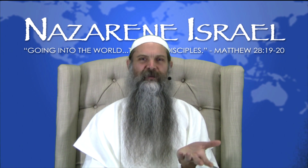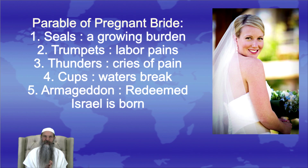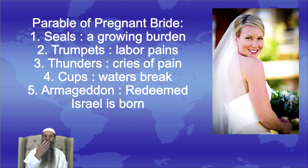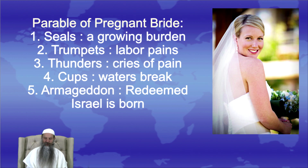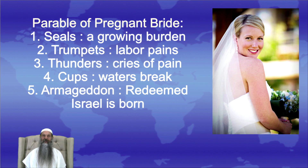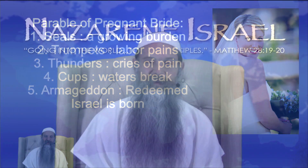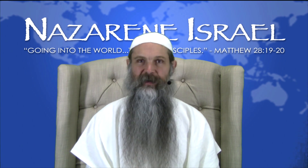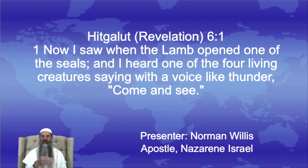People say, 'Norman, give me something easier to remember all this detail.' If we accept it, there is the parable of the pregnant bride. If Israel — or the Nazarene Israelites — received the Spirit in the first century, we liken this to Israel becoming a pregnant bride. The seals, playing out over thousands of years, represent a growing burden. The trumpets correspond to labor pain, the thunders to cries of pain, the cups to waters breaking, and Armageddon is when a redeemed Israel is born. Now in Revelation 6:1, we're definitely into the timeline — this advances the chronology forward.